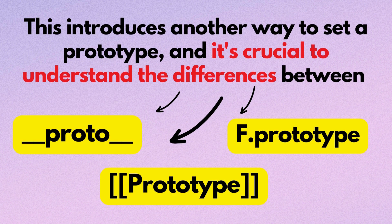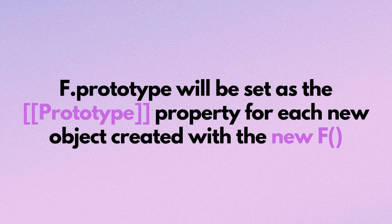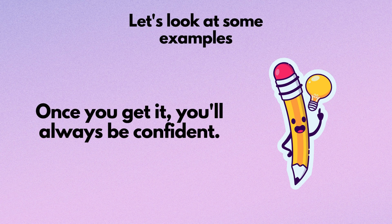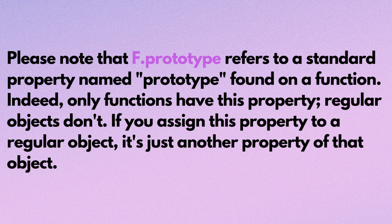Function.prototype introduces another way to set a prototype, and it's crucial to understand the differences between __proto__, the prototype property, and f.prototype. Objects can be created with the new operator, so f.prototype will be set as the prototype property for each new object created with new f. Please note that function.prototype refers to a standard property named prototype found on a function — only functions have this property, regular objects don't. If you assign this property to a regular object, it's just another property of that object.